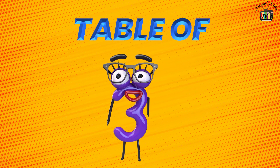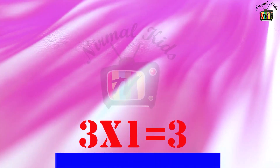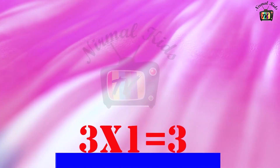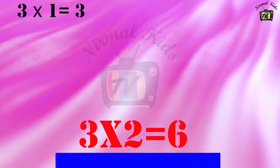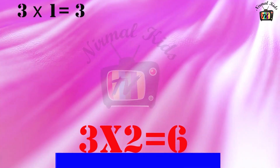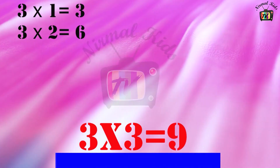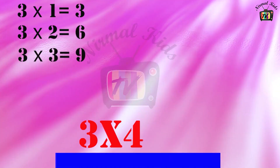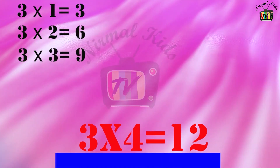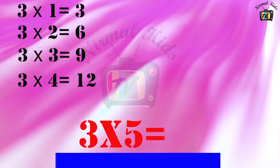Table of 3. 3 1 is 3. 3 2 is 6. 3 3 is 9. 3 4 is 12. 3 5 is 15.